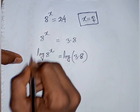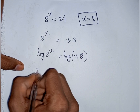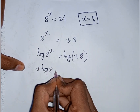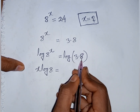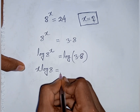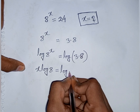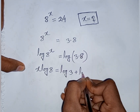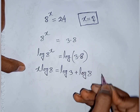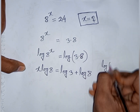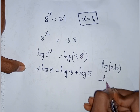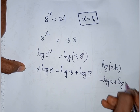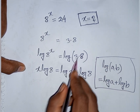The power x moves to the front: x log 8 equals log(3 times 8), which equals log 3 plus log 8, according to the formula log(a times b) equals log a plus log b.